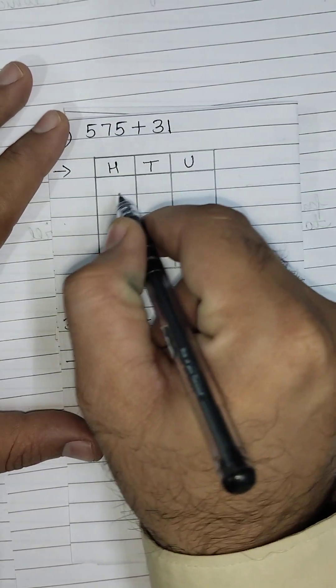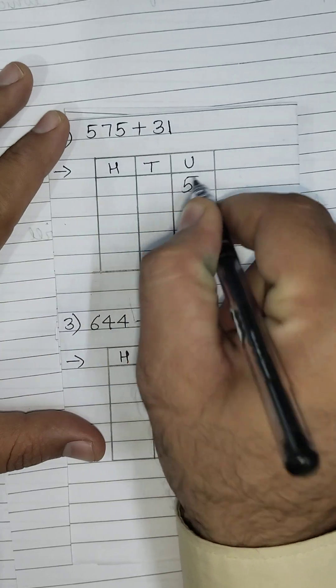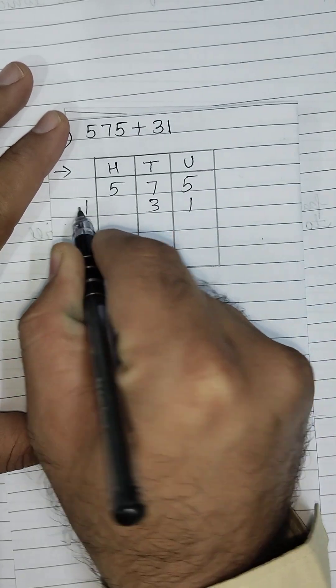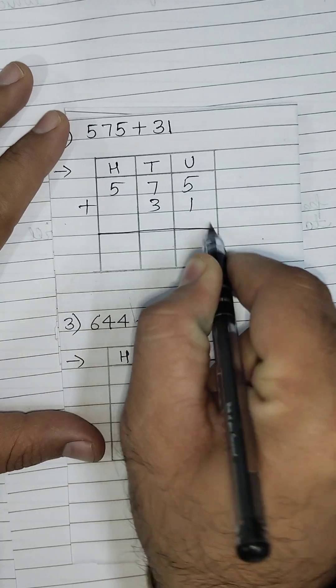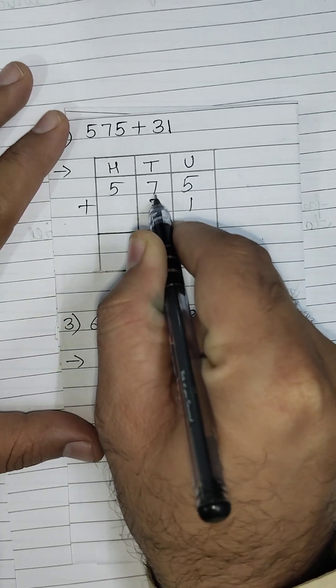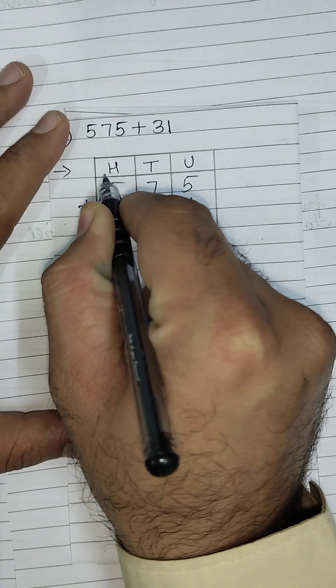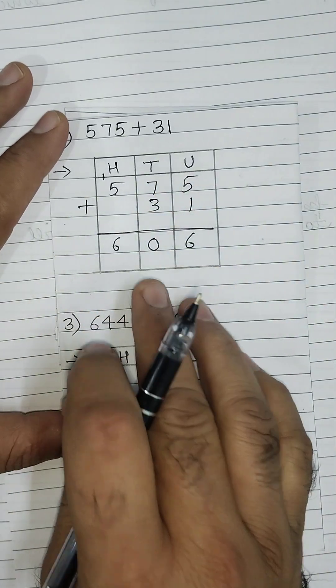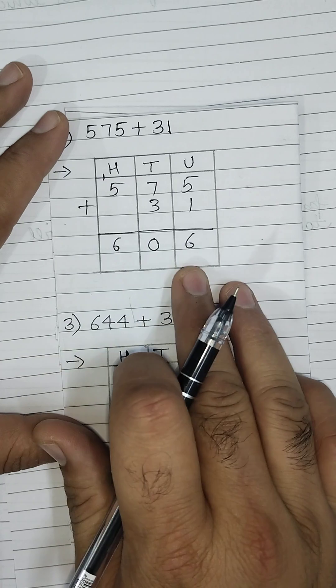Adding 575 plus 31. 5 plus 1, this will be 6. 7 plus 3, this will be 10. 1 will be carry. 5 plus 1, this will be 6. What is the total? This is 606.